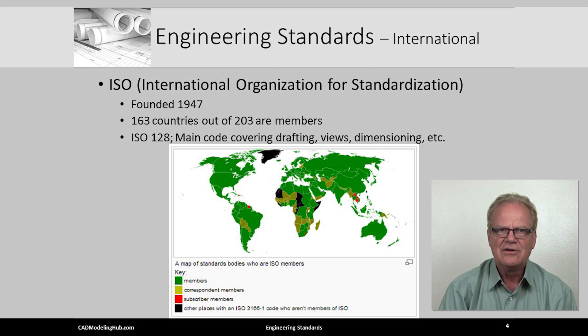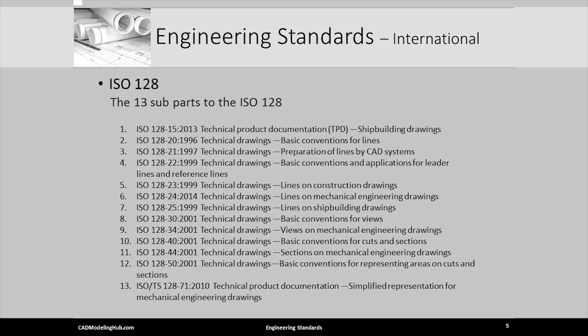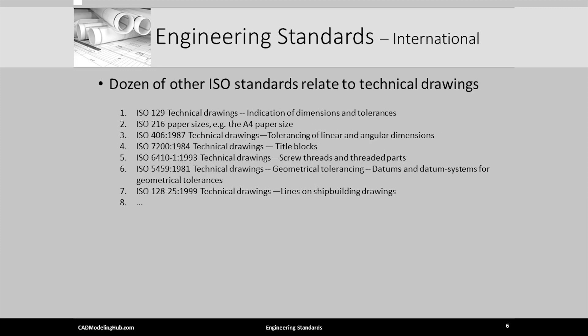The main ISO standard that covers modeling and drafting annotation is ISO 128. ISO 128 is divided into 13 major parts or sub-standards. Here is a list of the 13 parts. Notice how they cover such things as various technical drawing elements. Beyond the ISO 128 standards are dozens of standards that cover related technical drawing issues. Here is a short list of a few related standards.